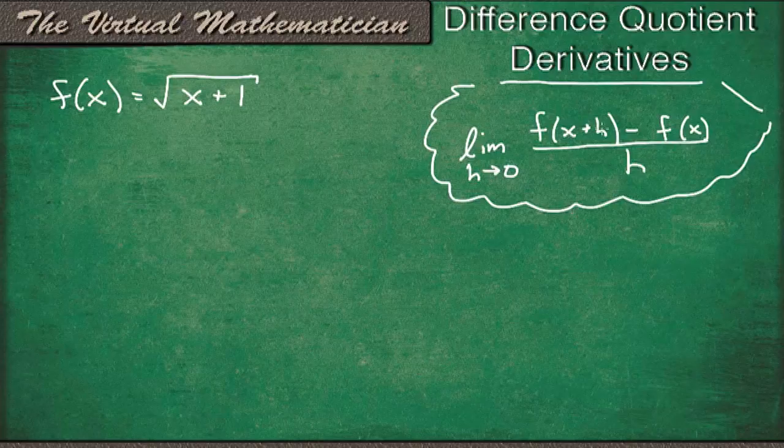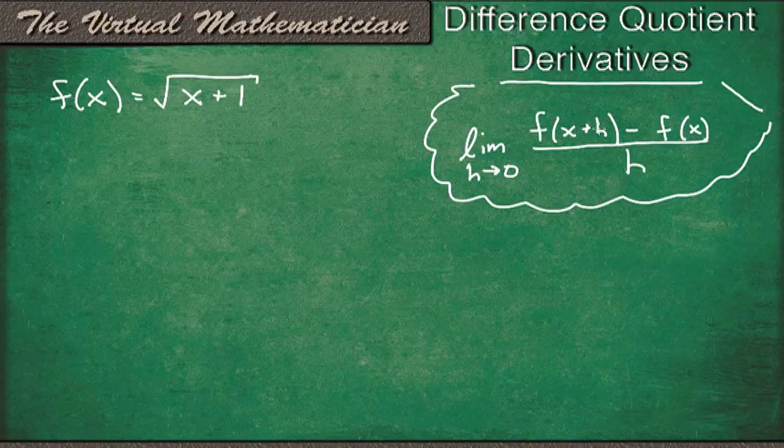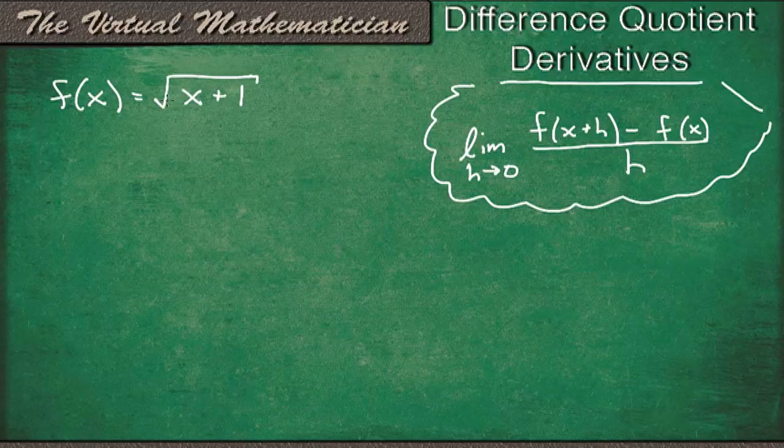So f of x plus h just means our regular function f of x, but wherever there's an x in it, we put x plus h instead. So let's look at this example here. f of x equals the square root of x plus 1. So let's find this derivative using the difference quotient.